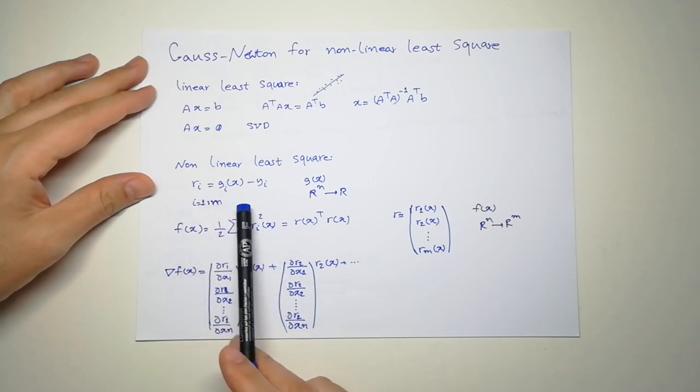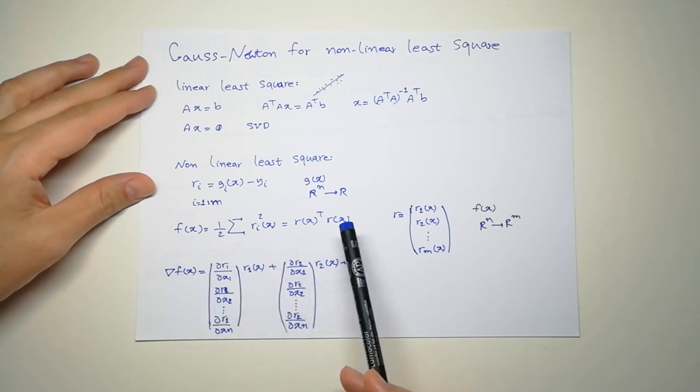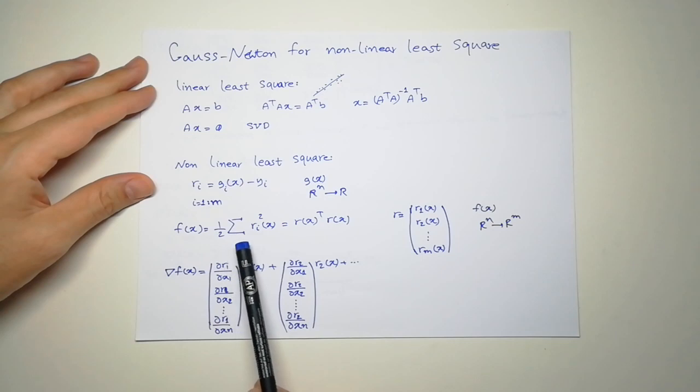R is a function of G and then G is a function of X, so we have to use the chain rule. 2 multiplied by 1 over 2 multiplied by the derivative multiplied by R_i.